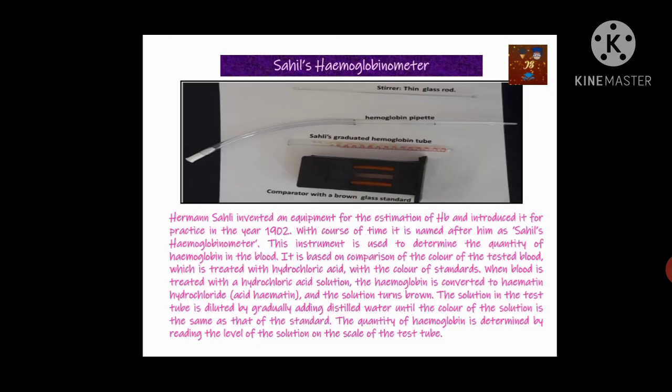The next instrument is Sahli's hemoglobinometer. As the name implies, it is used for the estimation of hemoglobin. Harman Sahli invented this equipment in 1902, indicating the long-recognized importance of measuring hemoglobin. The main parts are a glass rod used to mix the blood sample with hydrochloric acid, a hemoglobin pipette to measure the blood sample, and a comparator tube in which the HCl is mixed with the blood sample.